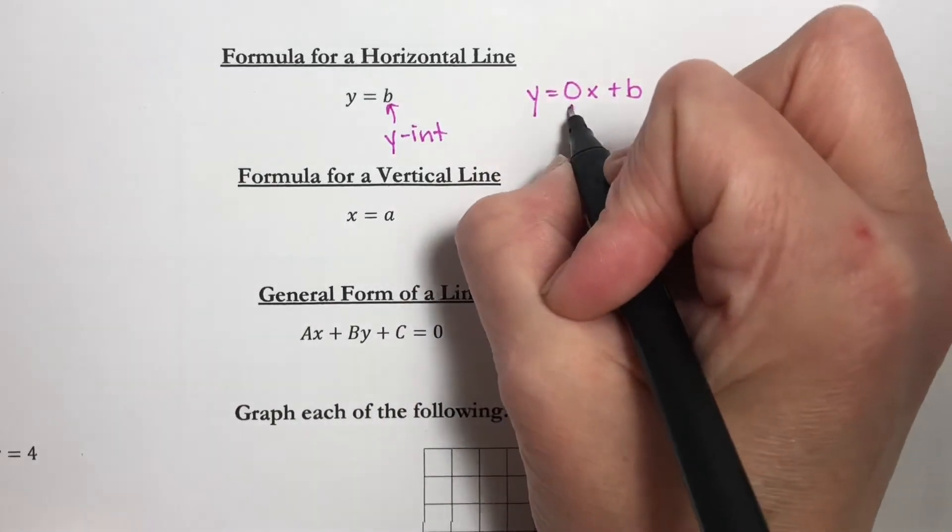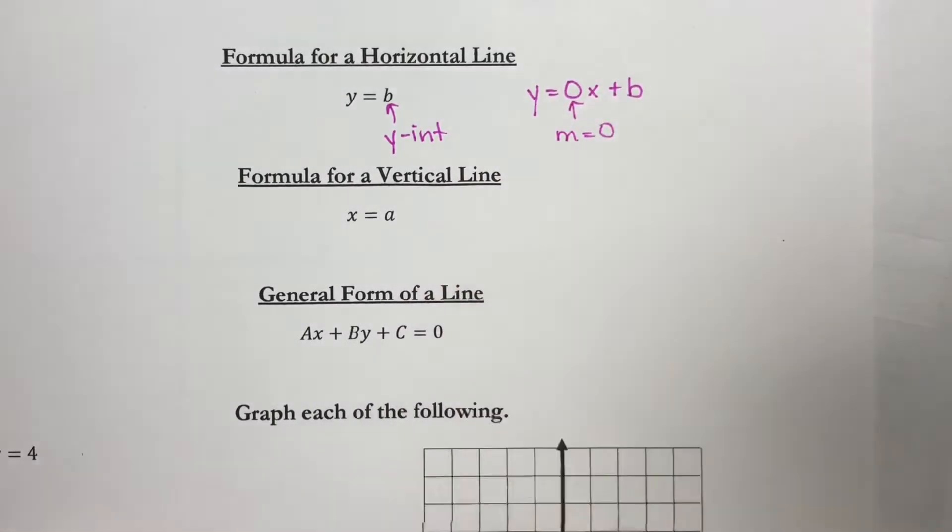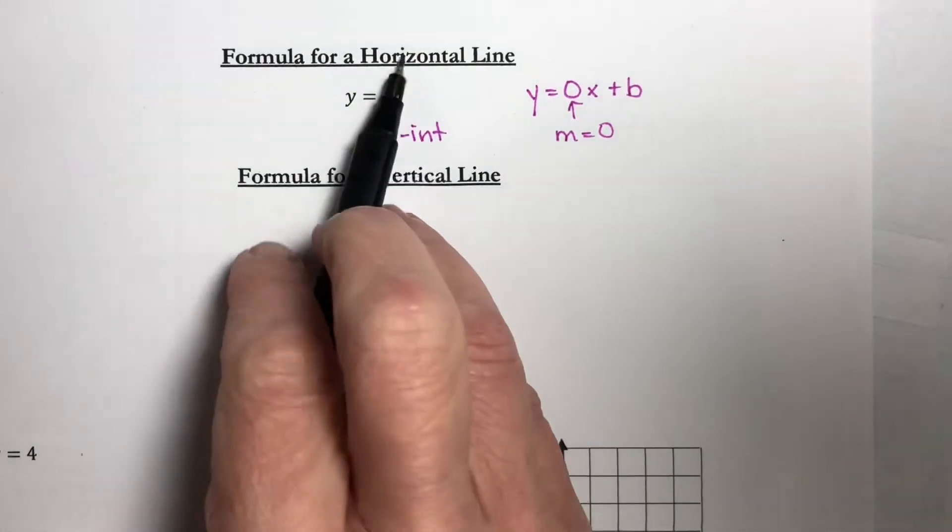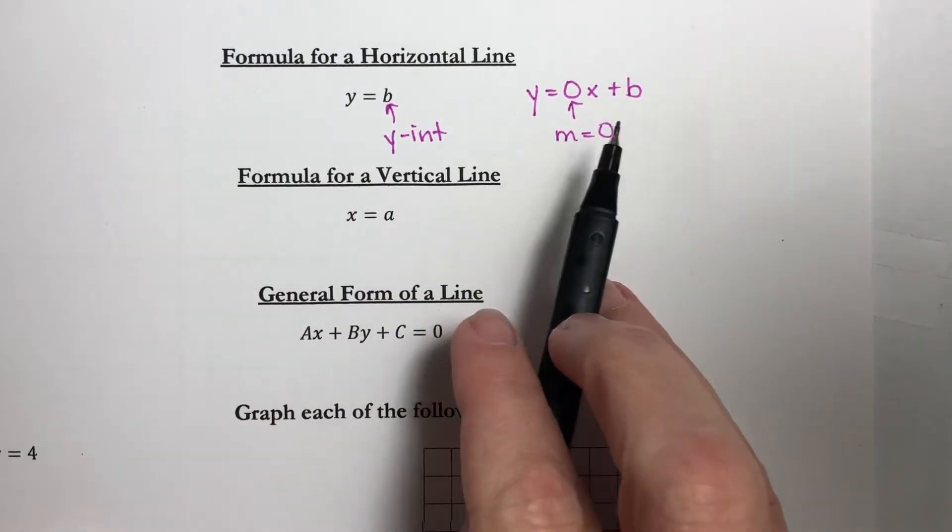But look right here. This would say our slope is 0. Horizontal lines always have a slope that is equal to 0.